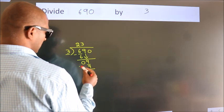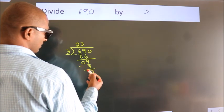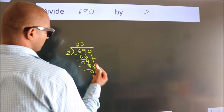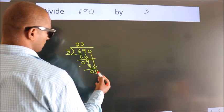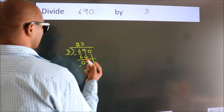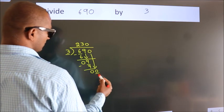After this, bring down the beside number. So, 0 down. So, 0. When do we get 0? In 3 table, 3 times 0, 0. Now, we subtract, we get 0.